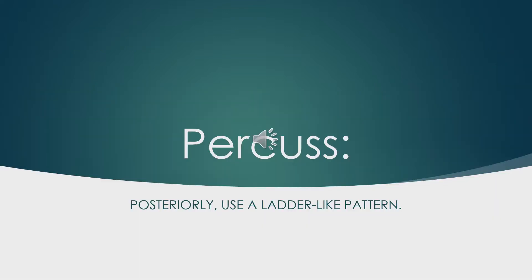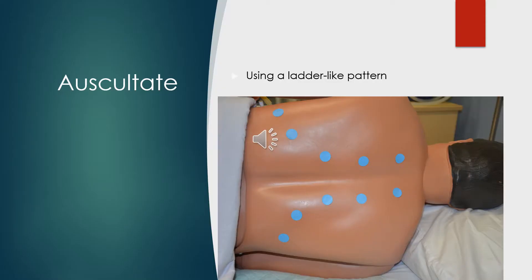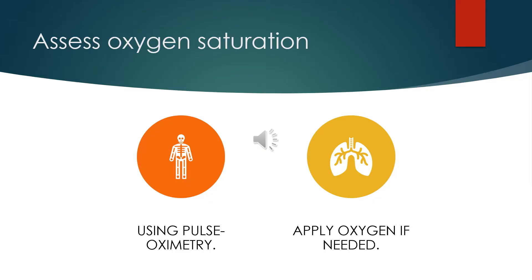We will then begin percussion posteriorly in a ladder-like pattern. We will then begin auscultation with our stethoscopes, also using a ladder-like pattern. This will be done both posteriorly and anteriorly. We will then assess for oxygen saturation using a pulse oximeter. We will apply oxygen or simulated oxygen if needed.